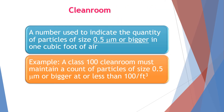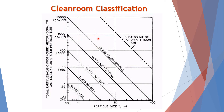Clean rooms are classified into classes — a number used to indicate the quantity of particles of size 0.5 micrometers or bigger per cubic foot of air. For example, a class 100 clean room must maintain a count of particles of size 0.5 micrometers or bigger at less than 100 per cubic foot. This count must be maintained throughout the processes.